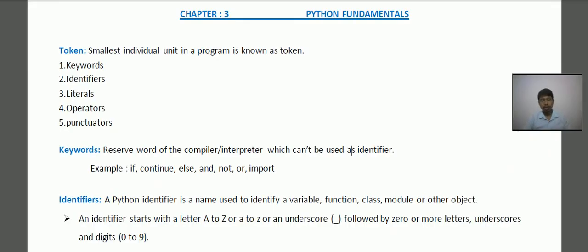In this tutorial we will learn some tokens in detail. Now what was the token? Token is the smallest individual unit in a program. So these are the types: keywords, identifiers, literals, operators, and punctuators.